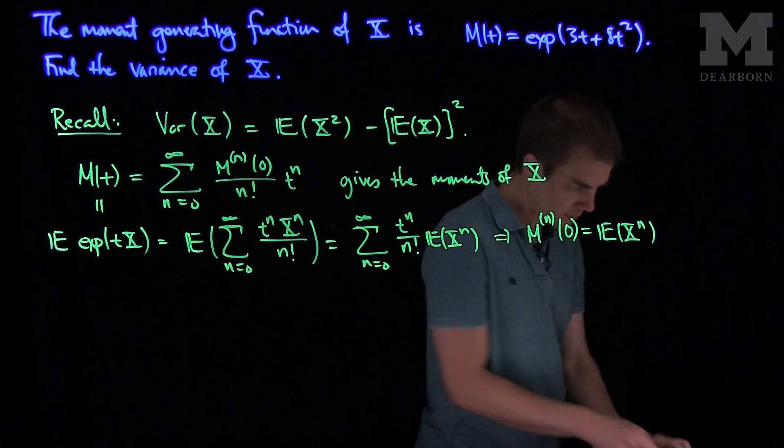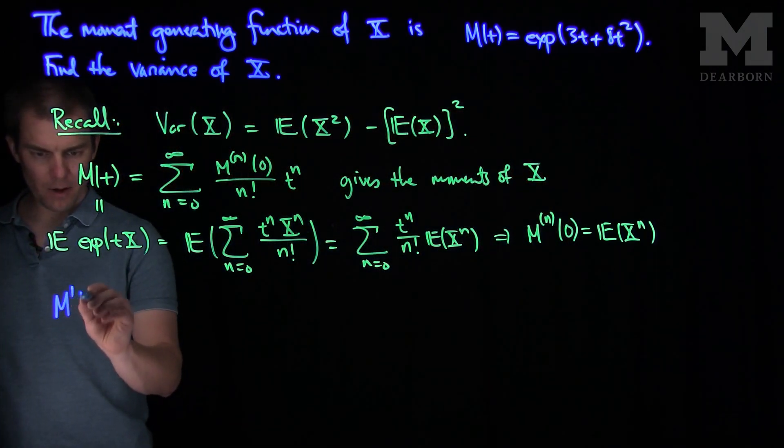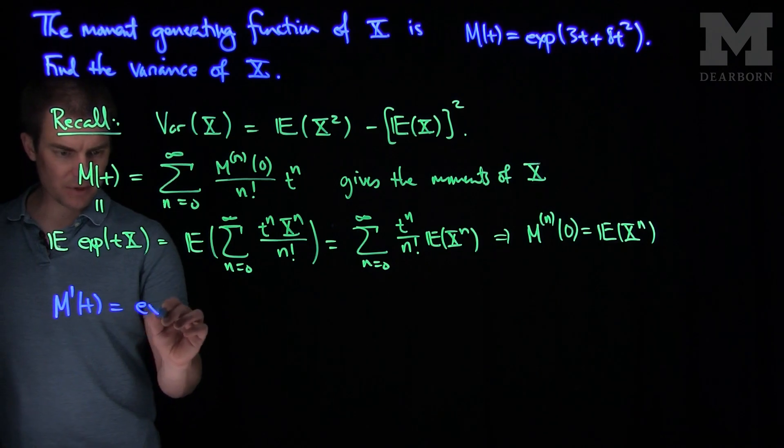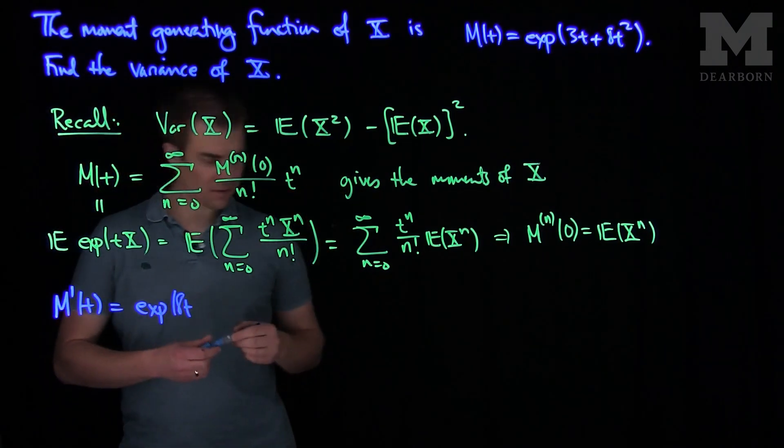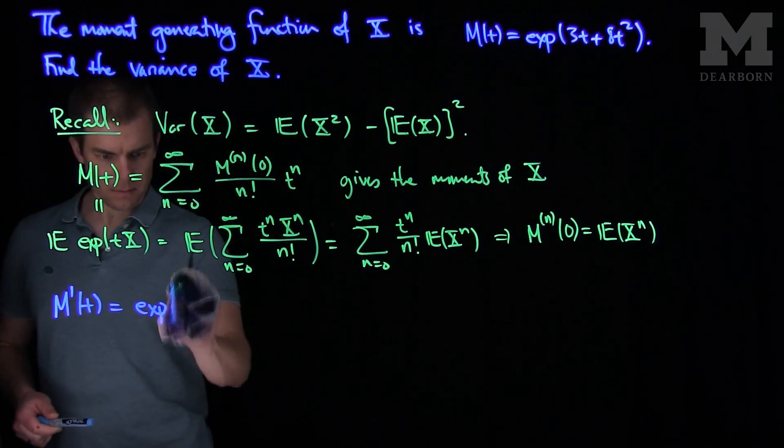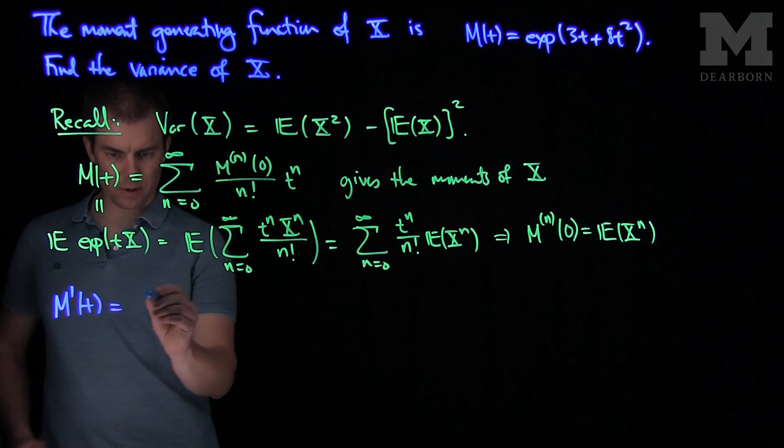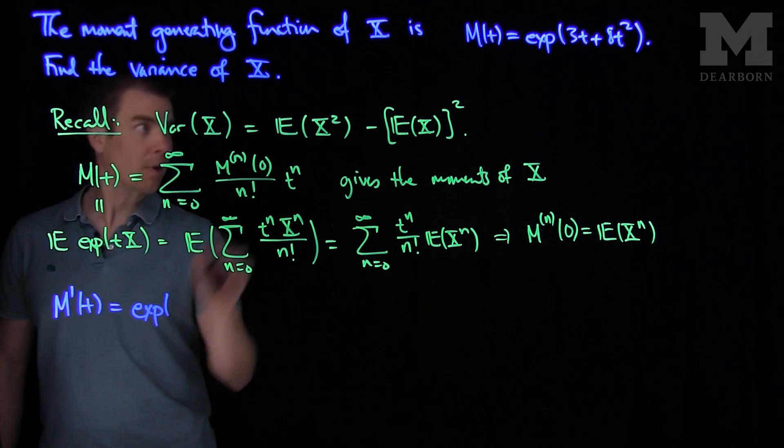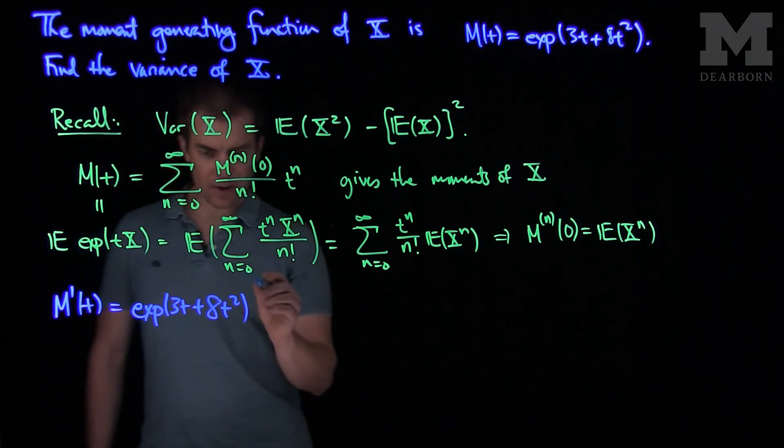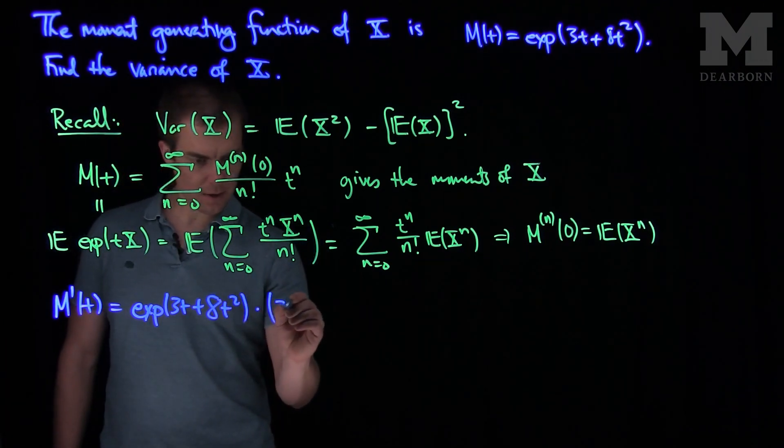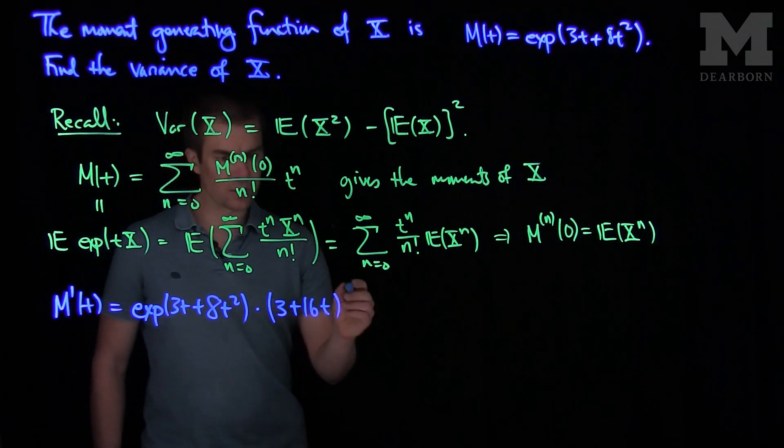M'(t) is the exponential of 3t plus 8t squared, and then by the chain rule, this will be multiplied by 3 plus 16t.